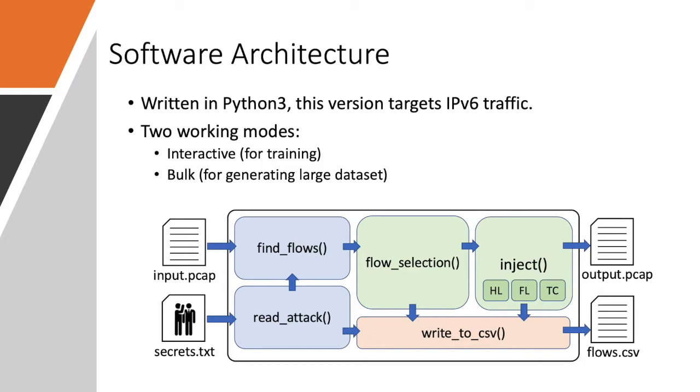Moreover, pcapStego produces a CSV file for log purposes and for the extraction process. There are two working modes that are the interactive mode, which is done for training purposes and the bulk mode for generating large datasets to make experiments and to prepare trials.